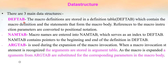DEFTAB contains the definition of the macro. A program which contains a macro — the initial code is the definition of the macro, which has the opcode MACRO. The definition completely is moved to the data structure DEFTAB. NAMTAB contains the name of the macro and also contains two pointers. NAMTAB contains pointers to the beginning and end of the definition in DEFTAB. ARGTAB contains the actual arguments and is used during the expansion of the macro invocation.